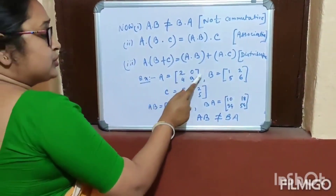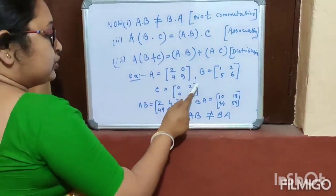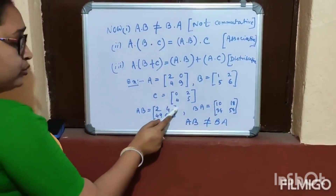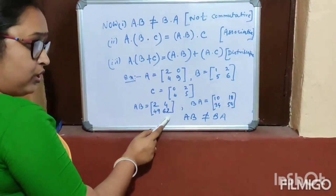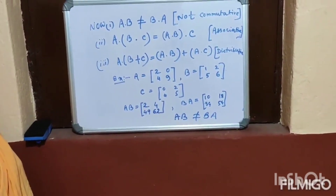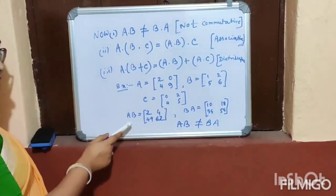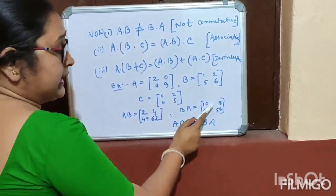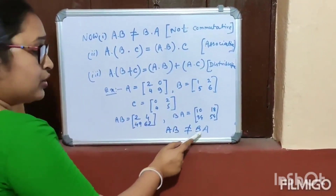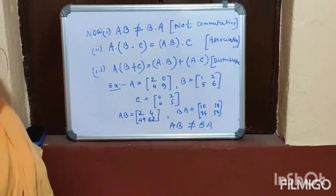For example, A = [2, 0, 4, 9] and B = [1, 2, 5, 6] and C = [0, 2, 4, 5]. As per the matrix multiplication rule, AB = [2, 4, 49, 62]. But BA = [10, 18, 34, 54]. AB and BA are not equal. That's why matrix multiplication is not commutative.